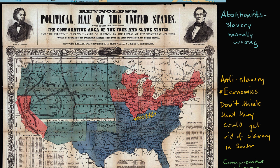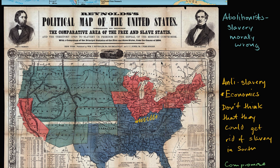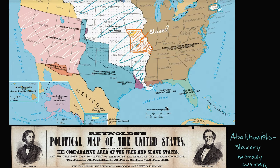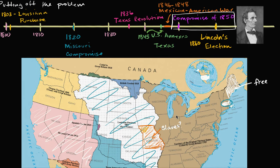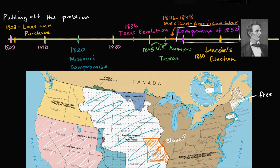White slave owners in the South are going to dig in even further to make sure their interests in slavery are protected. This gets us to the election of 1860, which was the straw that breaks the camel's back from a Southern perspective. During the 1850s, political battles over slavery kind of break the major political party of the time, the Whig Party. So in 1860, some of these leftover Whigs reorganize as the Republican Party — this is the first election with the Republican Party that we know today.